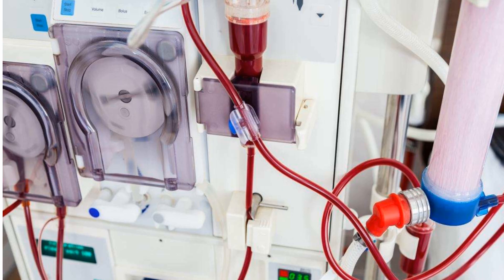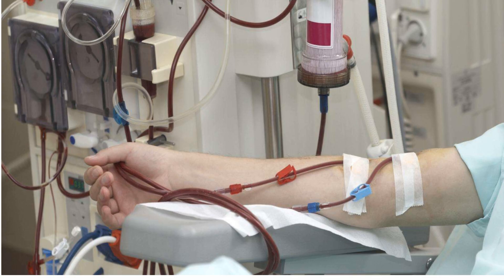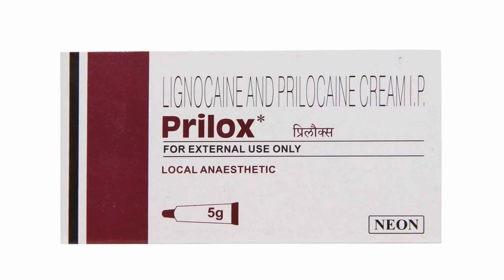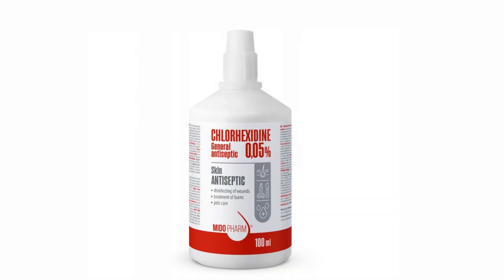Now let's look at the basic steps involved in preparing an access for hemodialysis. Catheters are the easiest to use as they can be directly connected to the dialysis machine. However, the steps for accessing a fistula or graft are similar and will be reviewed next. Firstly, we apply a local anesthetic to the area 30 minutes before dialysis — this step is optional and depends on the patient. Next, we clean the area using aseptic techniques and then insert two 15-gauge needles.